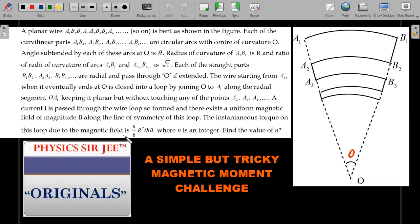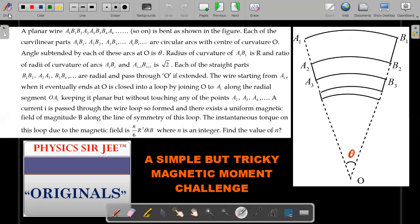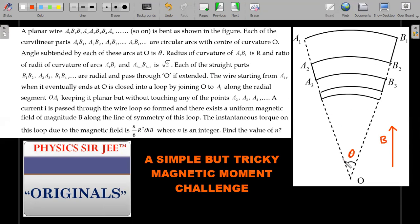The instantaneous torque on this loop due to this magnetic field is n/6 × r²θiB, where n is an integer. Find the value of n. I've drawn the magnetic field along this line of symmetry in the plane of the diagram. The magnetic moment is perpendicular to this page.